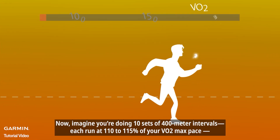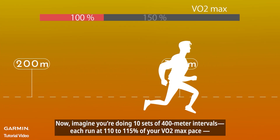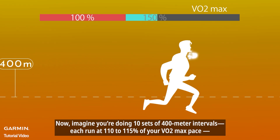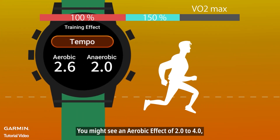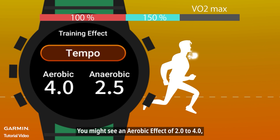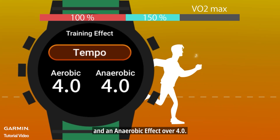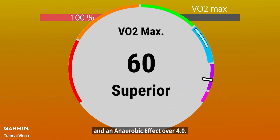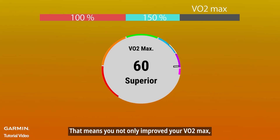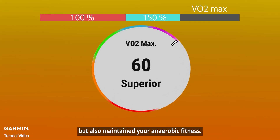Now imagine you're doing 10 sets of 400-meter intervals, each run at 110–115% of your VO2 max pace. You might see an aerobic effect of 2.0 to 4.0 and an anaerobic effect over 4.0. That means you not only improved your VO2 max but also maintained your anaerobic fitness.